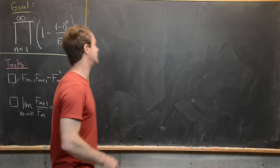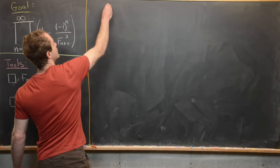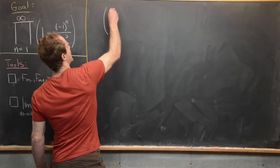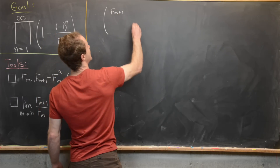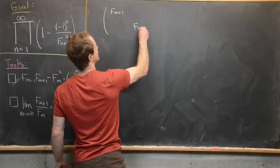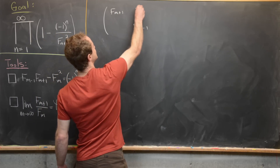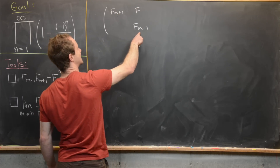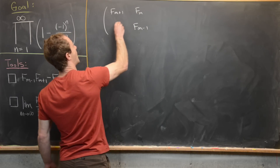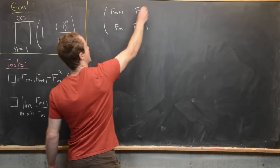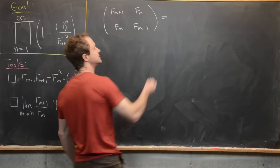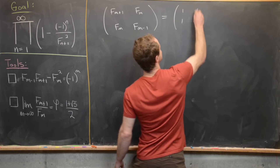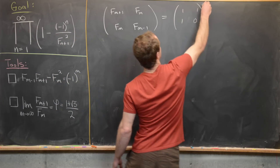To prove Cassini's identity, we'll use the following fact, which we'll also prove: the matrix made up of Fibonacci numbers with F_{m+1} and F_{m-1} on the diagonal and F_m on the off-diagonal equals the matrix [[1,1],[1,0]] to the m-th power.